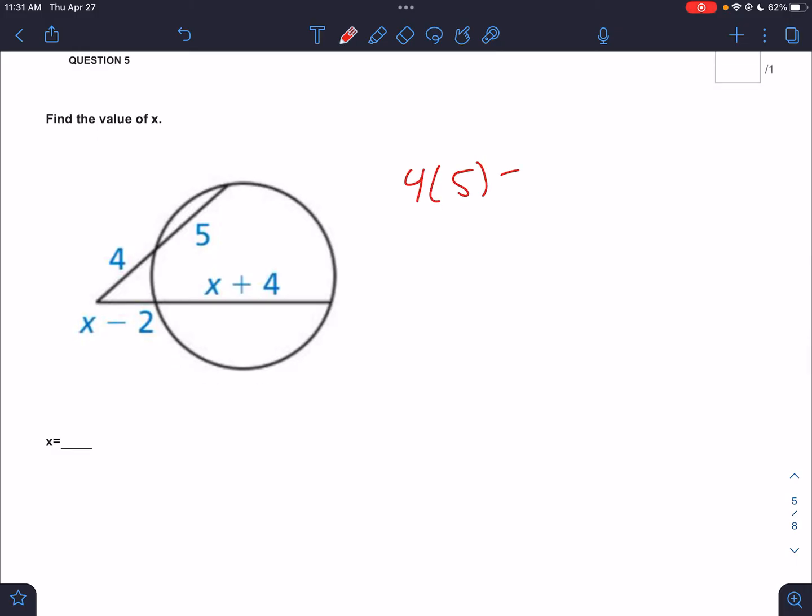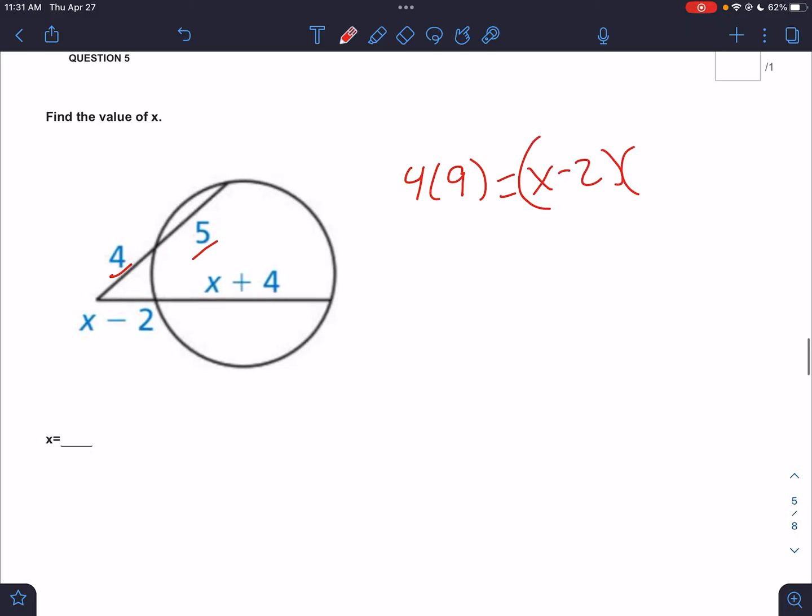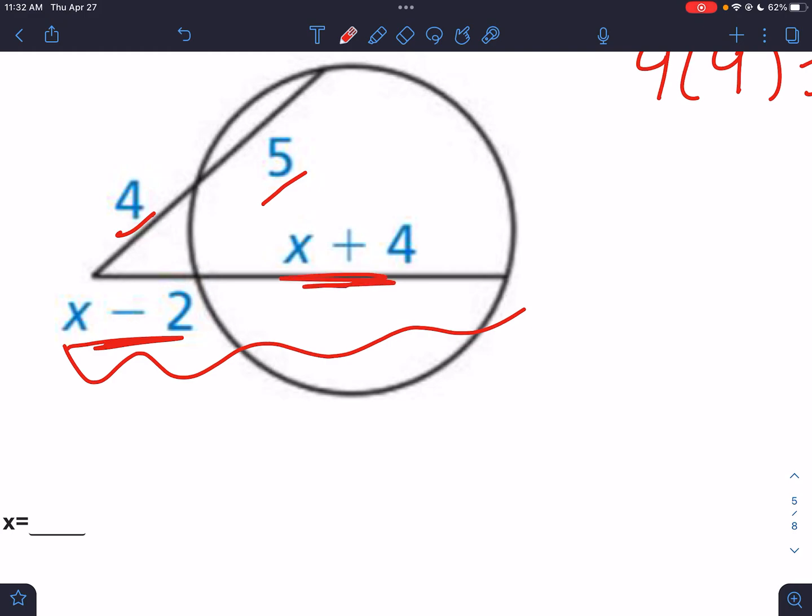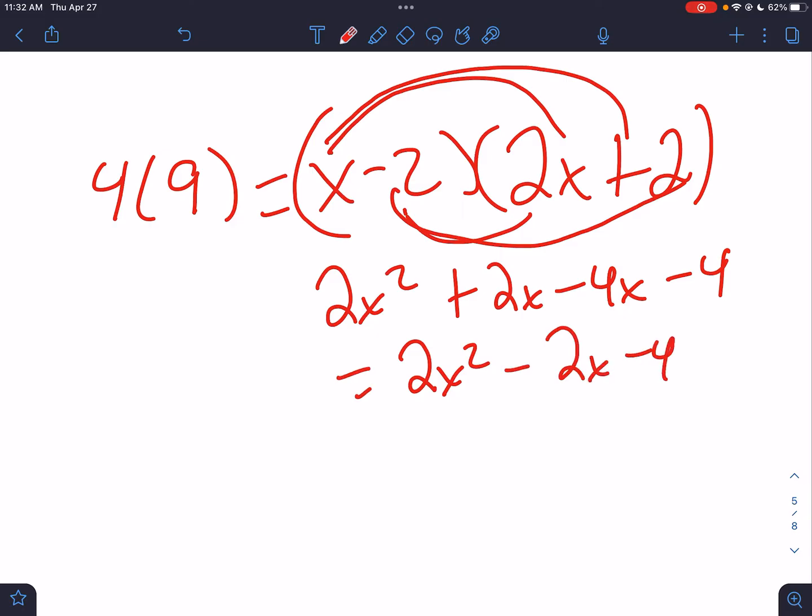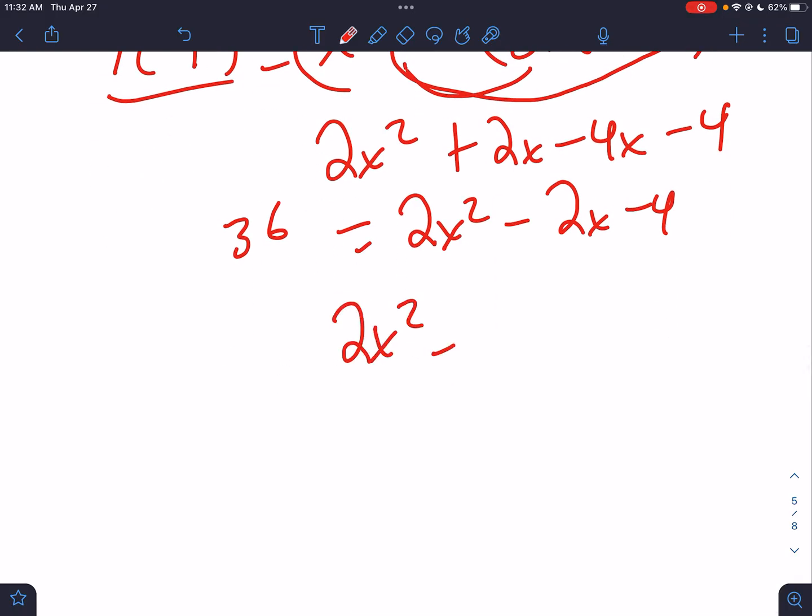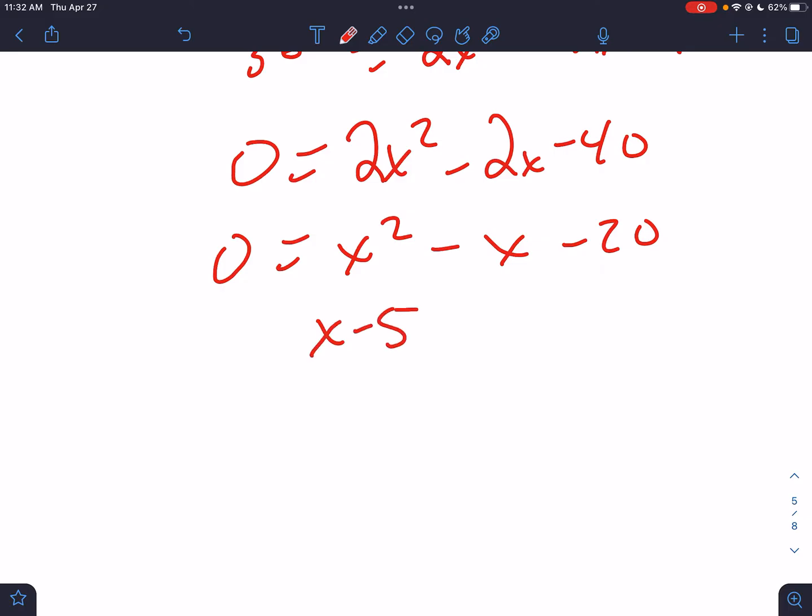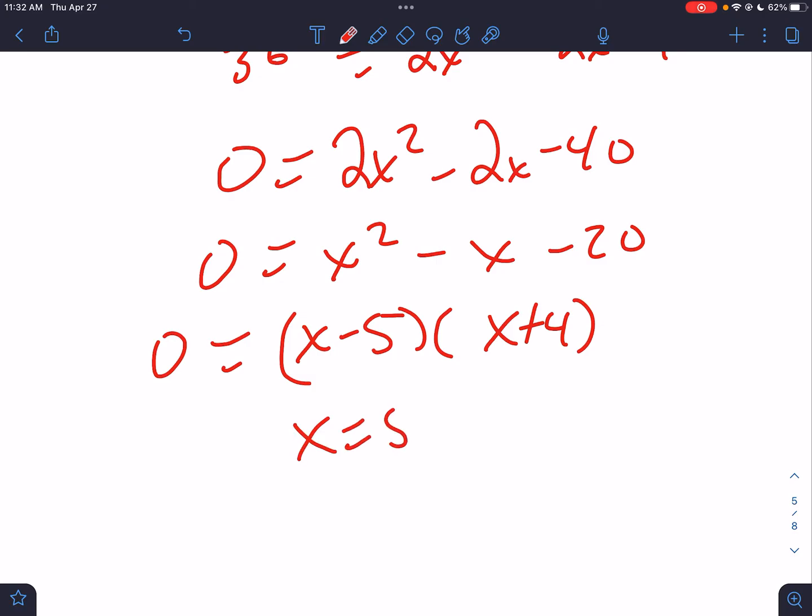Outside times total. 4 times the total, which is 4 plus 5, equals outside times total. And then the total would be 2x plus 2. That's x minus 2 plus x plus 4, so that's 2x plus 2. So we distribute. That's 2x squared plus 4x, plus 2x, minus 4x, and then minus 4. So that's 2x squared minus 2x minus 4. This is 36. So it's 2x squared minus 2x minus 40. So I can divide everything by 2. That'd be x squared minus x minus 20. So this is now a factoring question. That's going to be x minus 5 times x plus 4. So x equals 5 or negative 4.